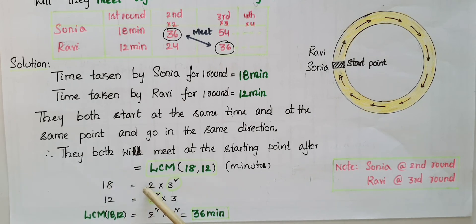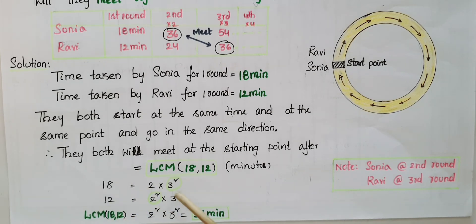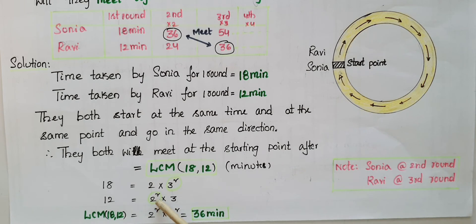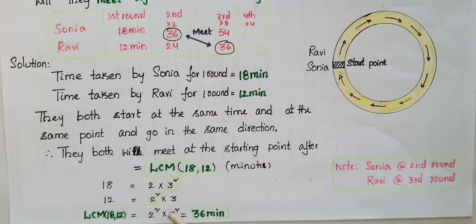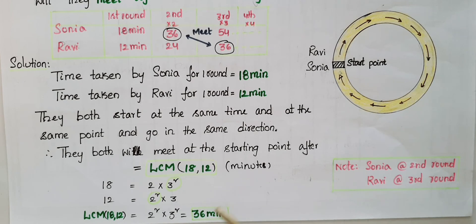18 can be prime factored as 2 × 3² = 18, and 12 can be written as 2² × 3. The common factors are 2 and 3. The highest power of 2 is 2², and the highest power of 3 is 3². So LCM of 18 and 12 = 2² × 3² = 36 minutes. Therefore they both meet after 36 minutes at the starting point.